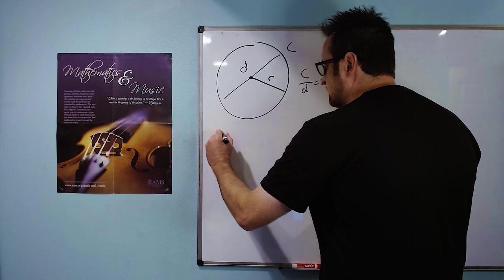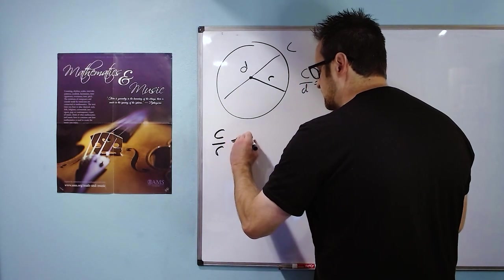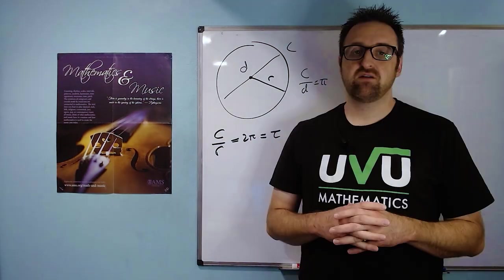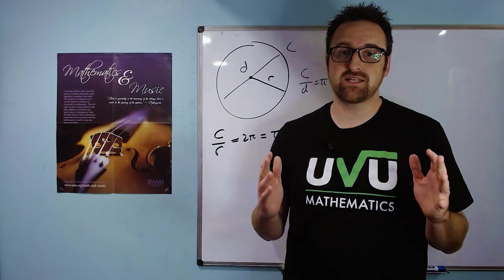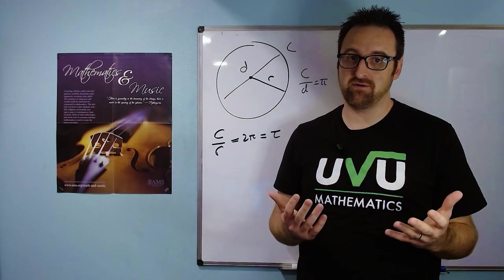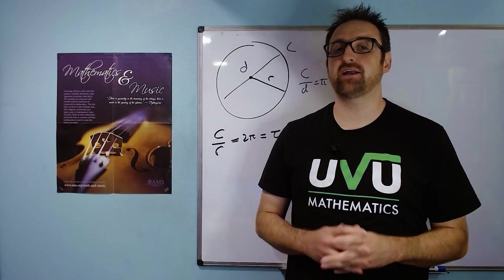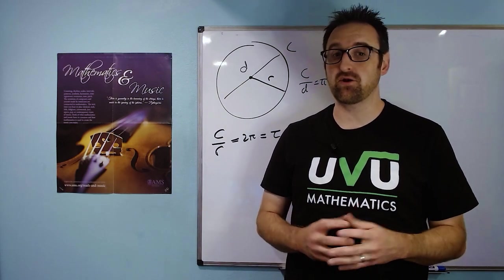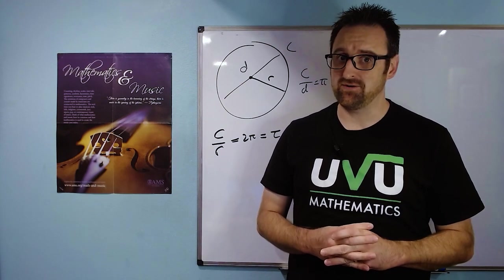And so he said the circle constant we should use is the circumference divided by the radius, which is equal to 2 pi, or what is now called tau. Well, Bob Palais and I are really close friends, and we have had this discussion many times about whether pi or tau is the better circle constant. Today I'm going to share with you a debate that he and I had on Pi Day 2023 to determine once and for all which is the better circle constant.